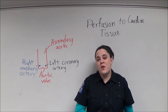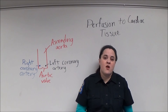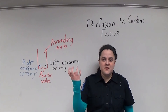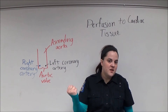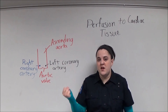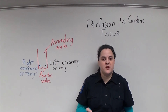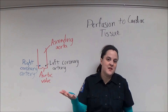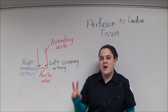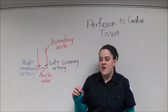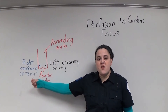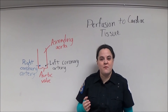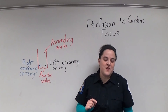Blood is supplied to the heart by coronary arteries and removed by coronary veins. During systole, when the heart is contracted, the coronary arteries are unable to perfuse, so most perfusion occurs during diastole when the muscle is relaxed. There are two main coronary arteries: the right main coronary artery and the left main coronary artery, which branch off just after the aortic valve.